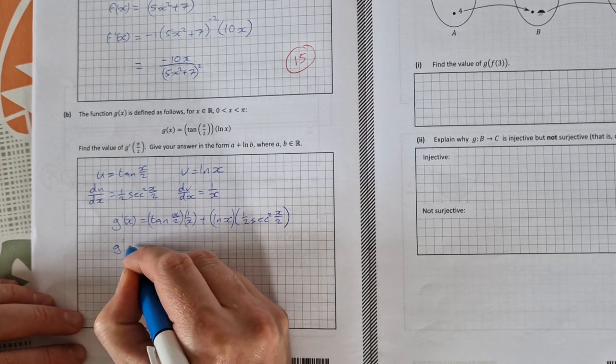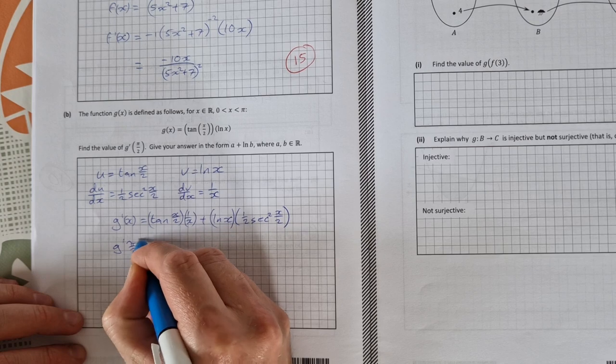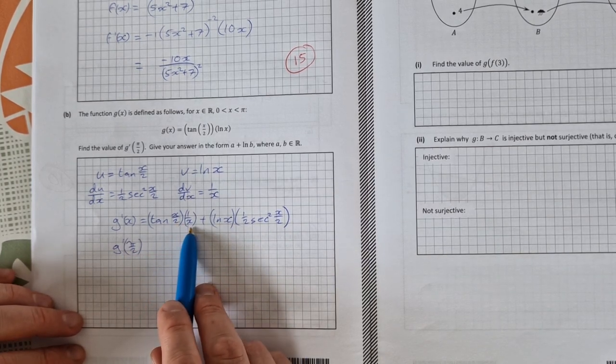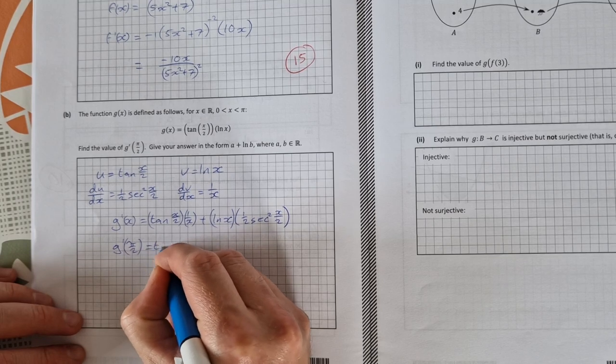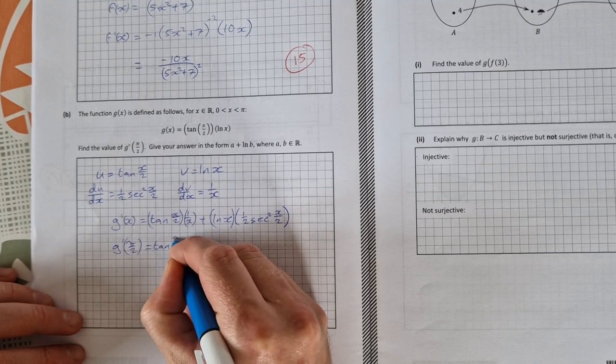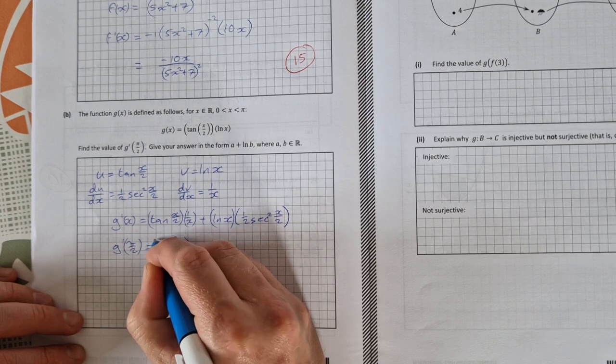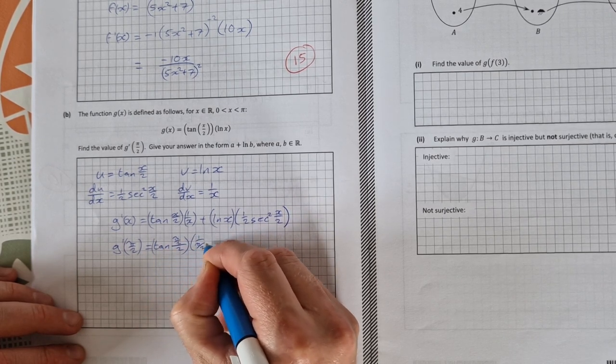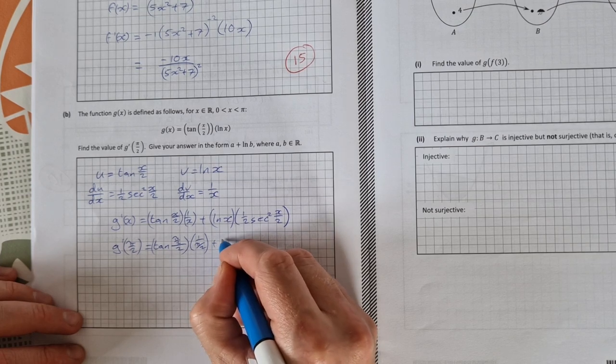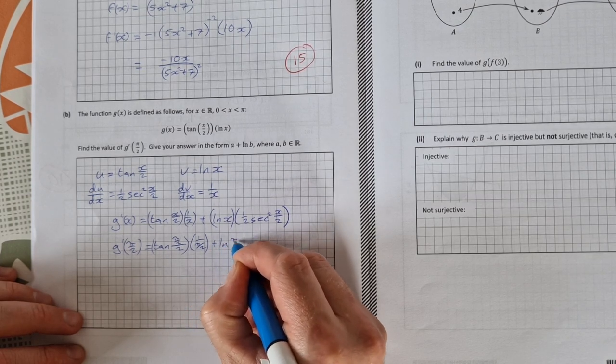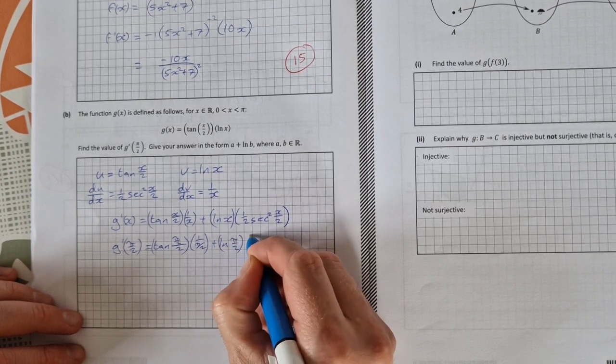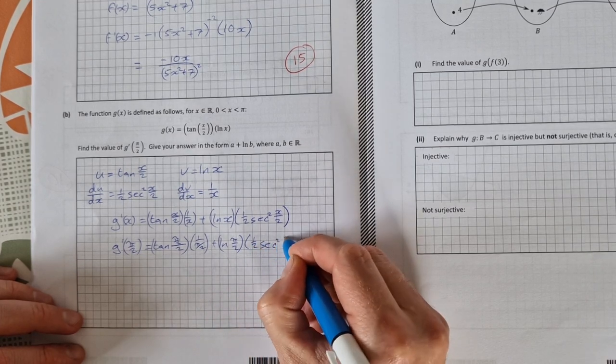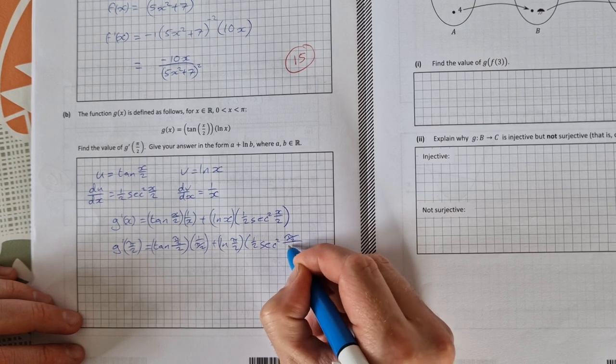So g prime of π over 2. So if we sub in π over 2 here and π over 2 here that would be tan of π over 4 times 1 over π over 2 plus the natural log of π over 2 times a half secant squared π over 4.